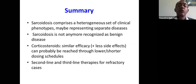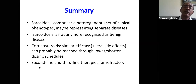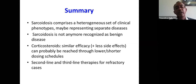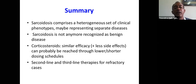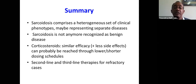In summary, sarcoidosis comprises a heterogeneous set of clinical phenotypes, possibly representing separate diseases. These phenotypes have been described only in white patients, so studies in Africa, Asia, or other parts of the world are needed to see if the same applies in other populations. Sarcoidosis is not anymore recognized as a benign disease — patients with sarcoidosis have a 1.6 times hazard ratio of dying compared to non-sarcoidosis cases in a Swedish registry study. Corticosteroid therapy is the main first-line therapy, and similar efficacy with fewer side effects can probably be reached through lower and shorter dosing regimens.